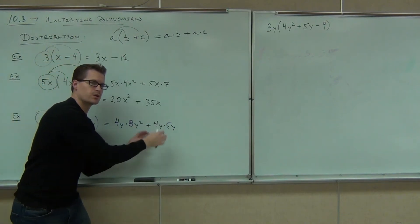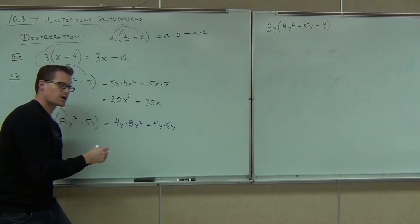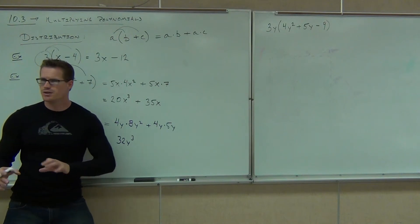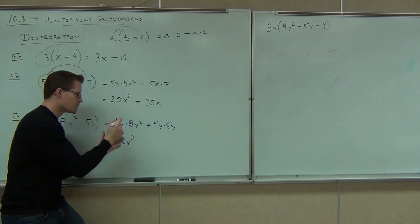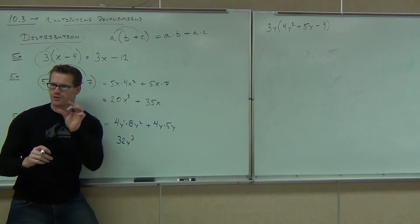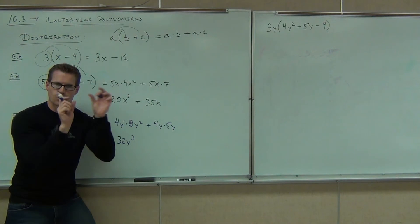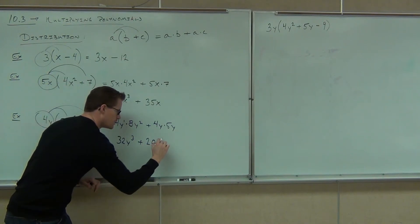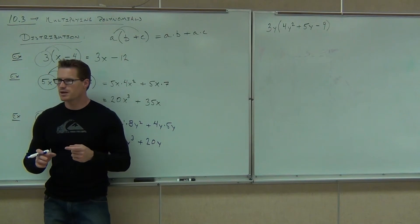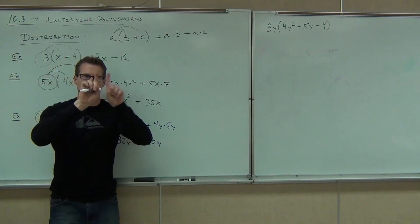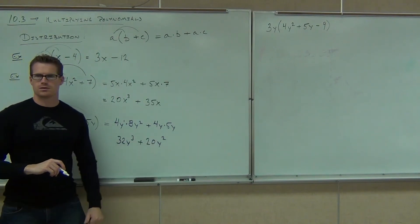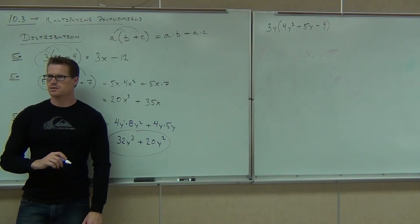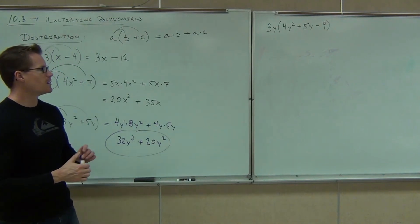Then we've got plus 4y times 5y. Raise your hand if you made it that far — good, you've got the idea of distribution down. Now we've got to apply the 10.2 step. 4y times 8y squared: y to the first times y to the second means one plus two — that's y to the third power. So we get 32y cubed. Not y squared, because when we multiply common bases we add the exponents. Then we have plus 20y squared, because y times y gives y squared. Can you combine any further? No — you're done right there.